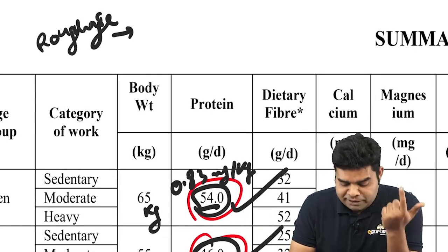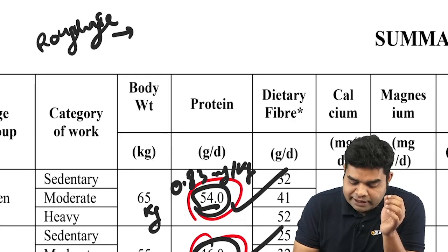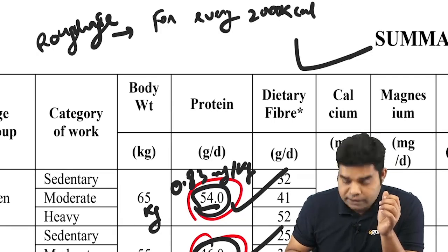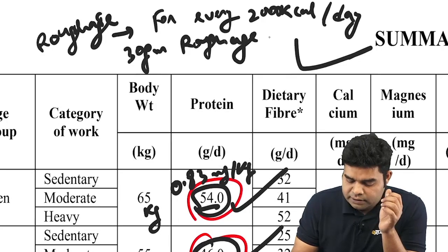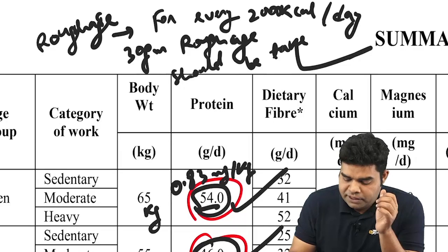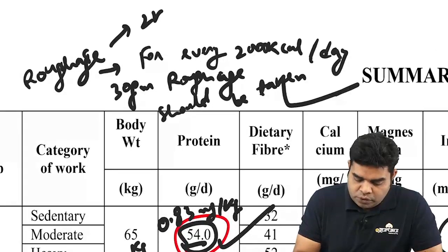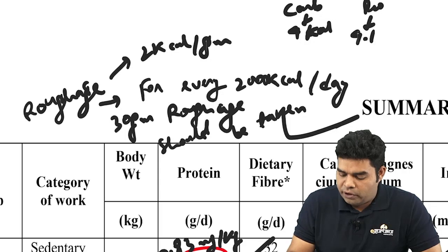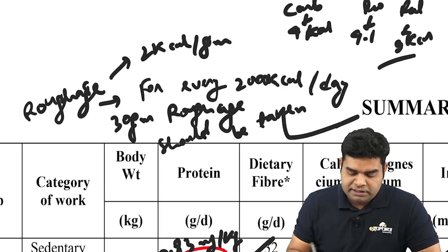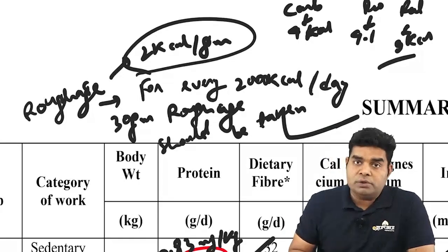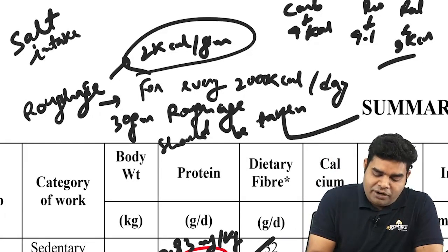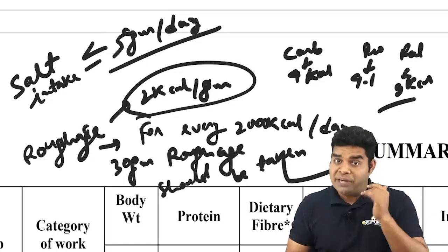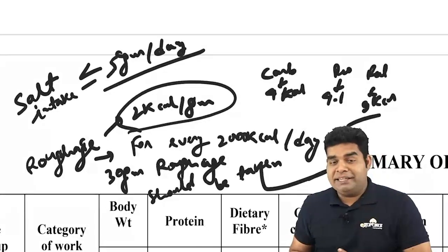The guideline states: for every 2000 kcal consumed, 30 grams of roughage should be taken. Roughage provides approximately 2 kcal per gram. For comparison: carbohydrates give 4 kcal/g, protein gives 4.1 kcal/g, and fat gives 9 kcal/g. Furthermore, salt intake should be less than or equal to 5 grams per day in an ideal Indian diet.